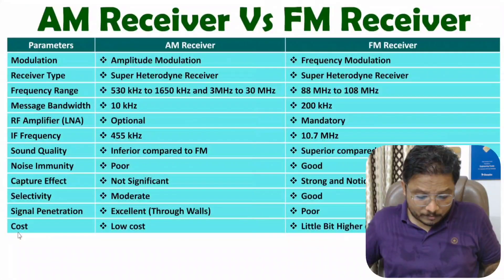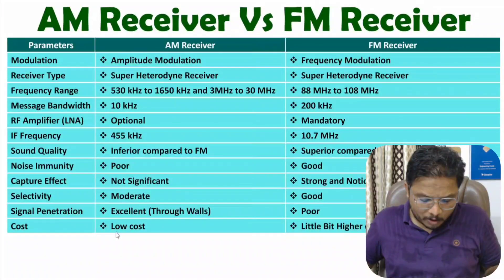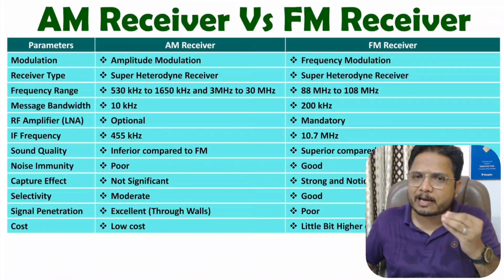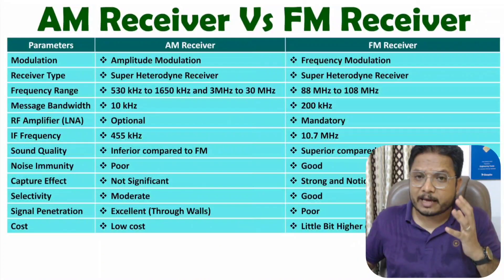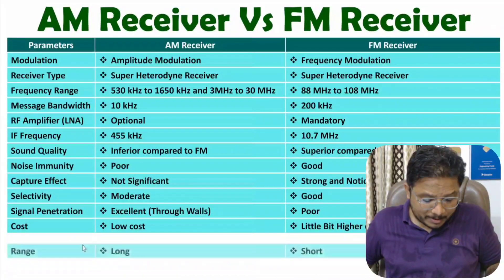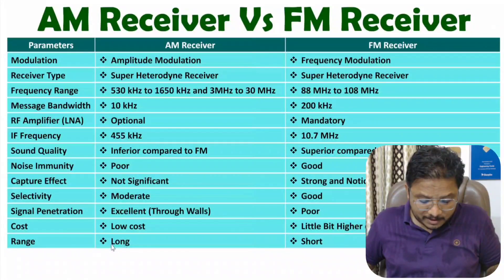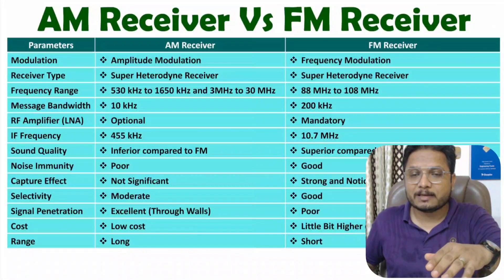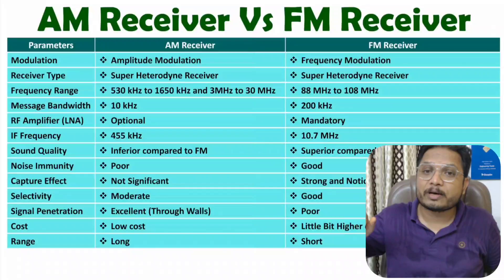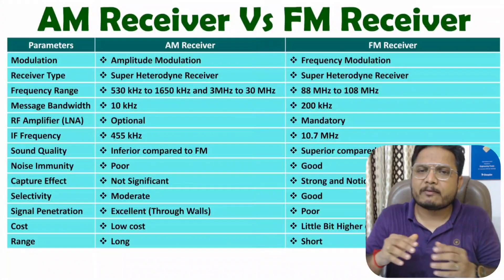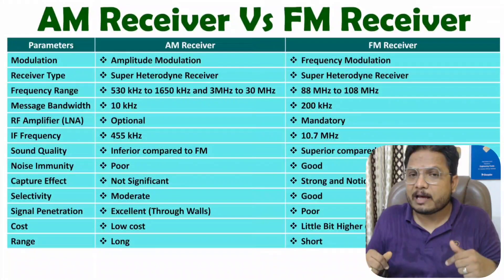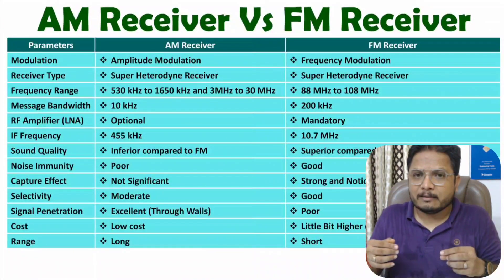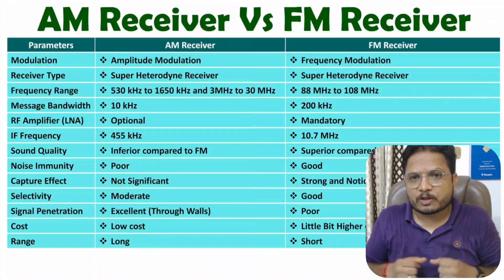The next parameter is cost. AM receiver is a low cost receiver, and FM receiver is also low cost but slightly higher cost compared to AM receiver. Regarding range, AM receiver has long range because signals penetrate through walls and propagation is based on ground wave propagation. FM receiver has short range — if obstacles are present, there will be attenuation of the signal.